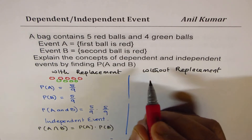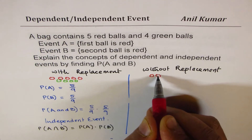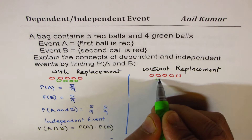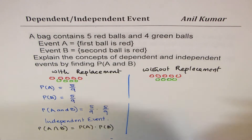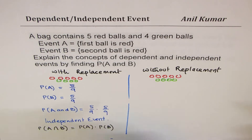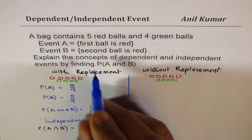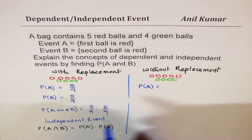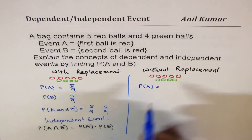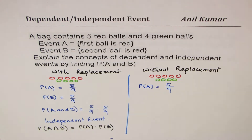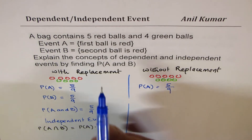Now, if we take the second case, where we again have five red balls and four green balls, and consider the case without replacement, the probability of picking the first red ball is 5 out of 9 — that is, 5 red out of a total of 9 balls.